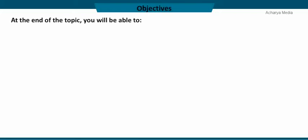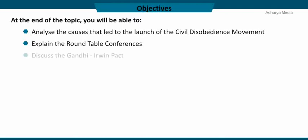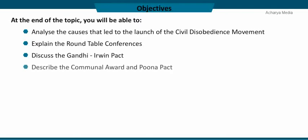At the end of the topic, you will be able to analyze the causes that led to the launch of the Civil Disobedience Movement, explain the roundtable conferences, discuss the Gandhi-Irwin Pact, and describe the Communal Award and Poona Pact.